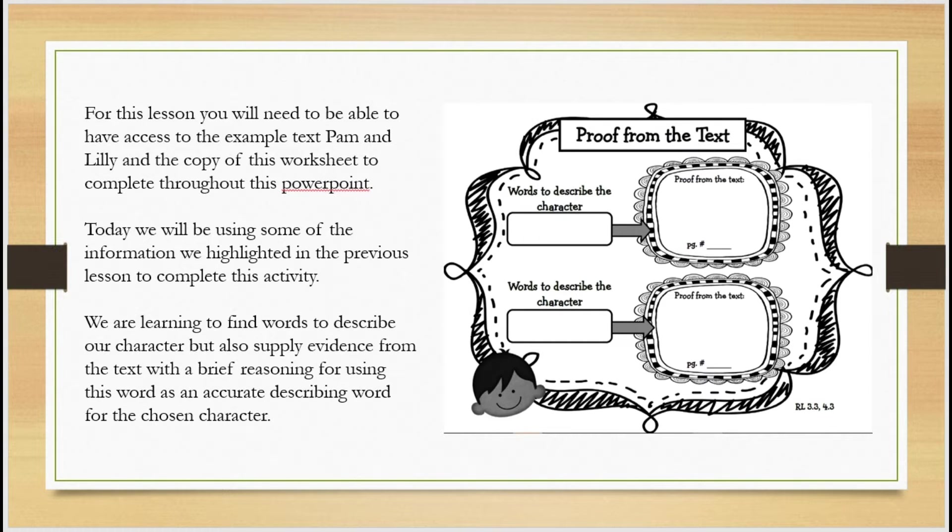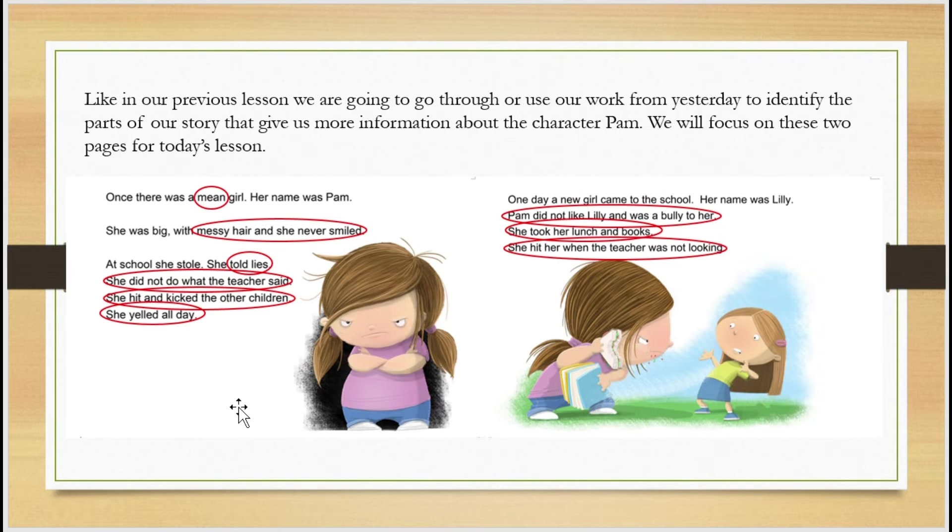Here are some examples. I've gone through just like yesterday's lesson and identified different parts in our story that give us more information about the character of Pam. Very similar things that were circled yesterday because we are looking for the same sort of thing, but we're going to be using specific parts from our text today to fill out our worksheet.